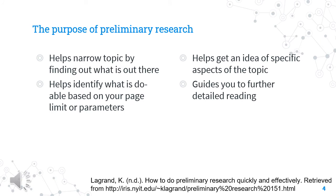The following slides are informed from the document 'How to Do Preliminary Research Quickly and Effectively' from the New York Institute of Technology. The purpose of preliminary research is to help narrow your topic by finding what is out there. It helps to identify what is doable based on your page limit or research parameters, and it helps you get an idea of specific aspects of your topic, guiding you to further detailed reading and better questions.